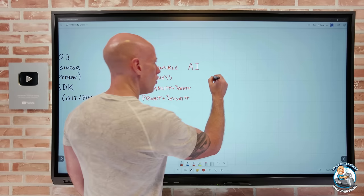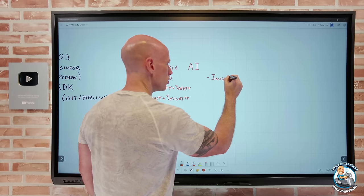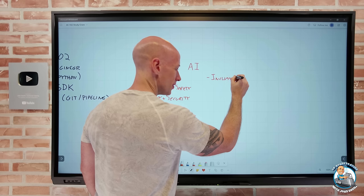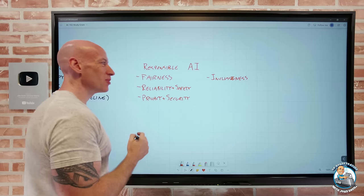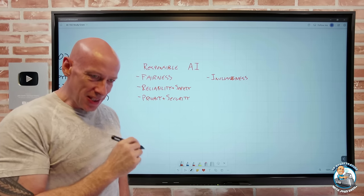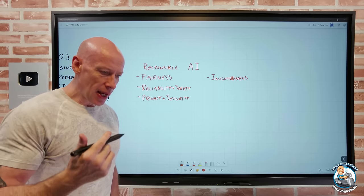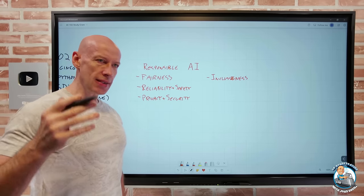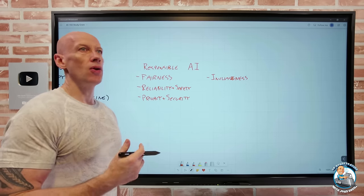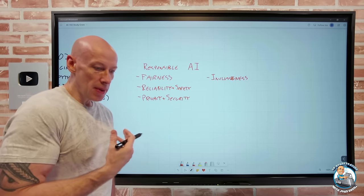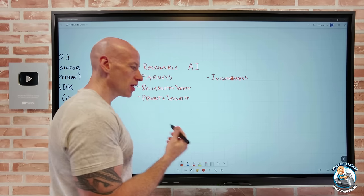Inclusiveness: all systems should empower everyone and engage all people — every part of society, regardless of gender, background, or physical abilities, should be able to take advantage of and leverage AI.